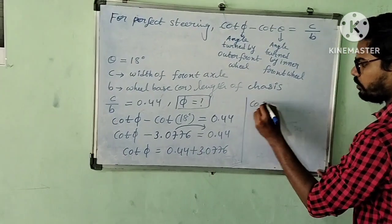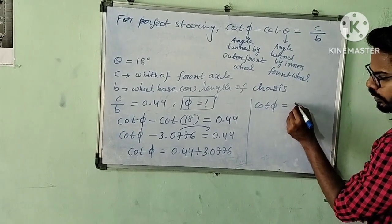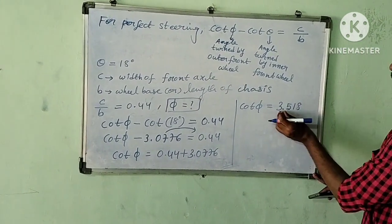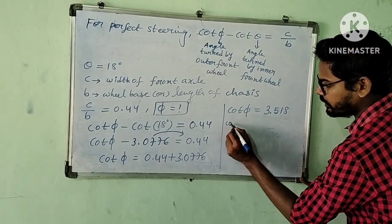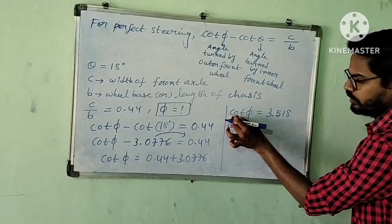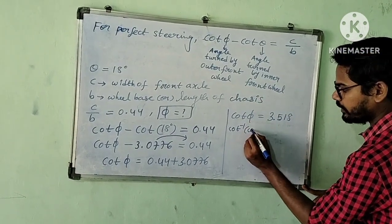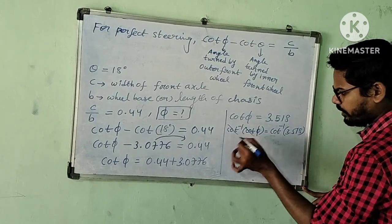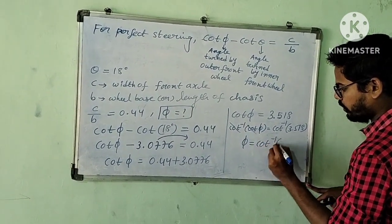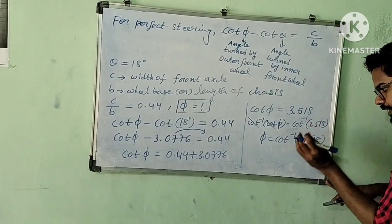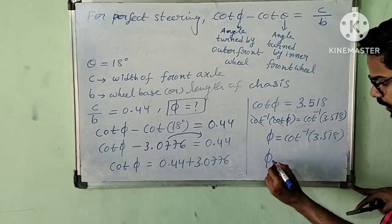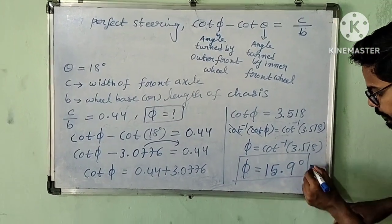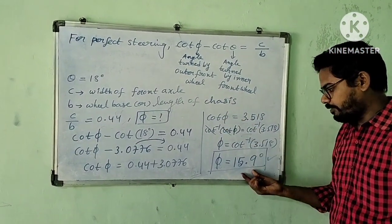Adding these two values, we get cot φ is approximately equal to 3.518. We need the value of φ, so apply cot inverse on both sides. Cot inverse of cot φ gives φ equals cot inverse of 3.518. Calculating the inverse trigonometric function, we get φ is approximately 15.9 degrees. Therefore, the angle turned by the outer front wheel is 15.9 degrees.